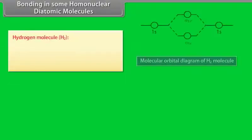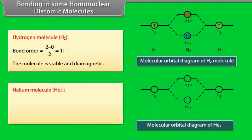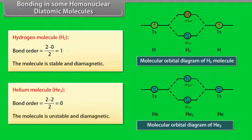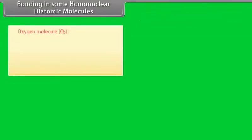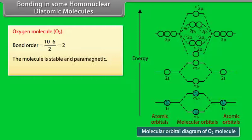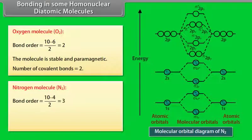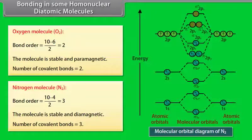Bonding in some homonuclear diatomic molecules: H₂ has a bond order of 1 — stable and diamagnetic. He₂ has a bond order of 0 — unstable and diamagnetic. O₂ has a bond order of 2 — stable and paramagnetic, with 2 covalent bonds. N₂ has a bond order of 3 — stable and diamagnetic, with 3 covalent bonds.